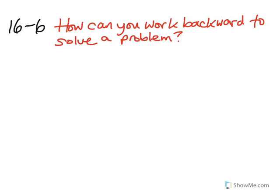Think about when in everyday life you have had to work backward. There are clearly a lot of possibilities, but most of them will deal with a time whenever you know the end result that you're trying to get to and you're trying to figure out how to get there. For example, something you want to buy at the store — you know how much it costs, and you may work backward in order to earn the money to be able to buy it.